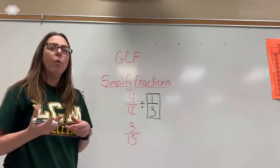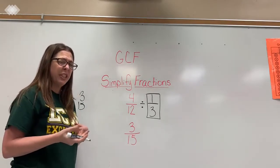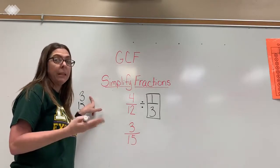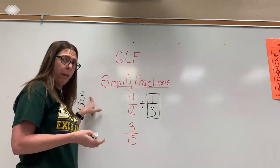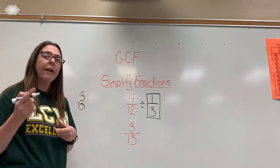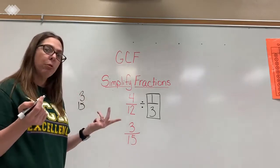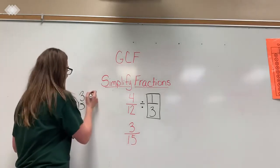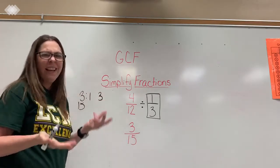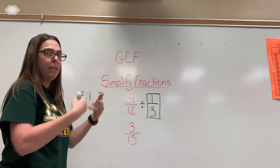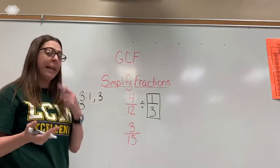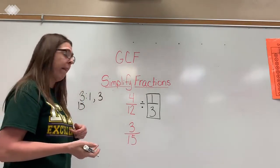I would think about what are the factors that I would use to get the product of 3. What would I multiply to get the product of 3? I know if I think 1 times 3, that equals 3. There's nothing times 2. And once I get back to the number I started with, I know I'm finished. So the only factors we have for 3 are 1 and 3.